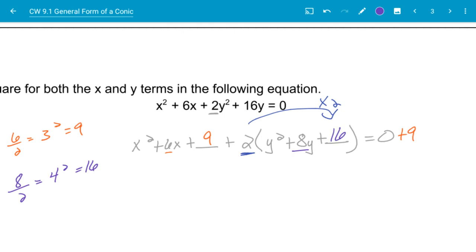However, I have this 2 sitting out here, so I have to distribute it through. So 2 times 16 is 32. So I'm really adding 32 to this side. So I have to put a plus 32 over to this side.